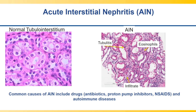AIN is a common condition and a differential diagnosis of acute kidney injury in hospitalized patients. The picture on the left shows the normal kidney epithelium, and on the right is acute interstitial nephritis on biopsy, which shows tubulitis, interstitial infiltrate, and eosinophils, which are the hallmark of the disease diagnosis.